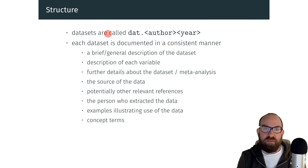The datasets have a consistent naming scheme. They are all called dat.period, the author—the first author of the meta-analysis from which the data were extracted—and the publication year. The datasets are also documented in a consistent manner. So we have a general description of the dataset, a description of each variable included, further details about the dataset or the meta-analysis, the source of the data, so this is typically a publication from which the data were extracted, potentially other relevant references, maybe if the same data were used in other publications.